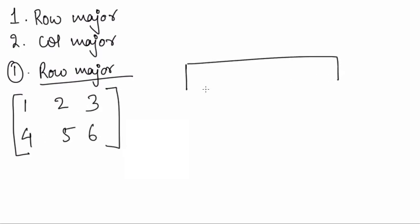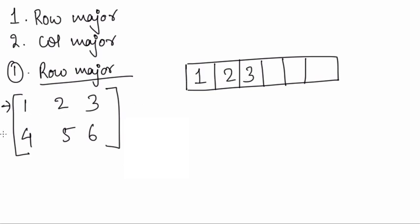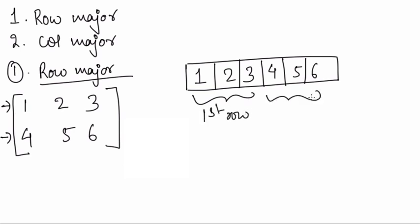I have a memory space having six divisions. In these six divisions, I will fill the first row first — that is the elements in the first row: 1, 2 and 3. Now I will jump to the second row: 4, 5 and 6. So what I did was I fill the first row elements first, then the second row elements next. If I had more rows to follow, I would fill up by extending this memory block further.